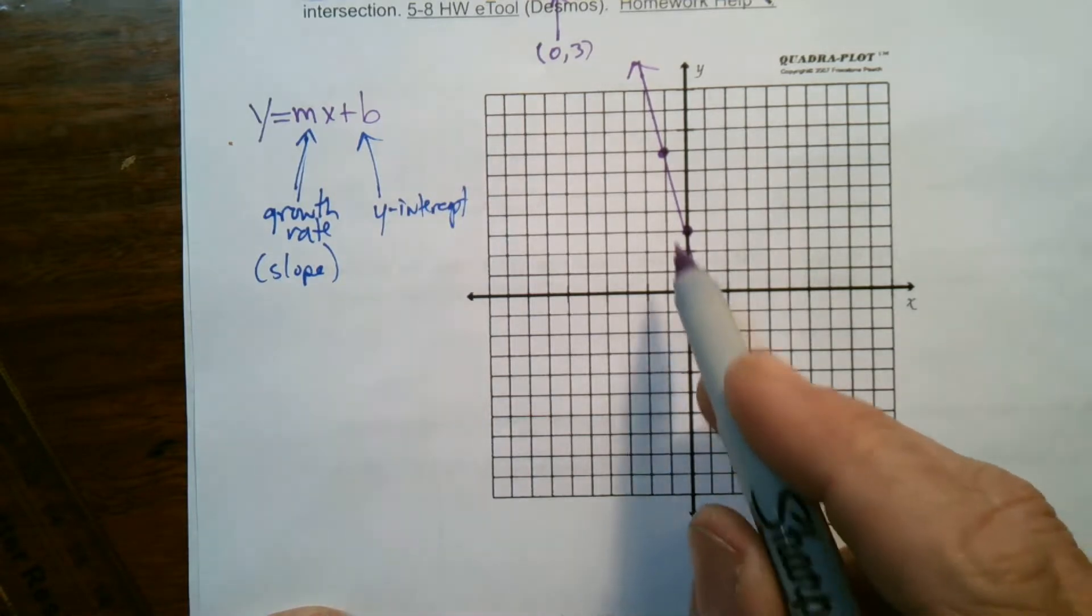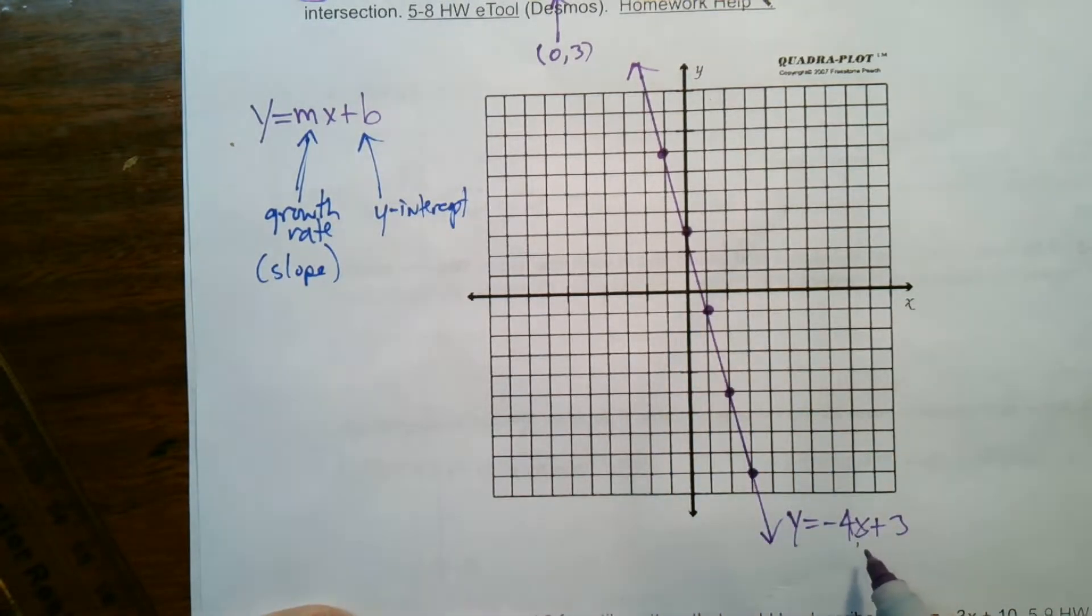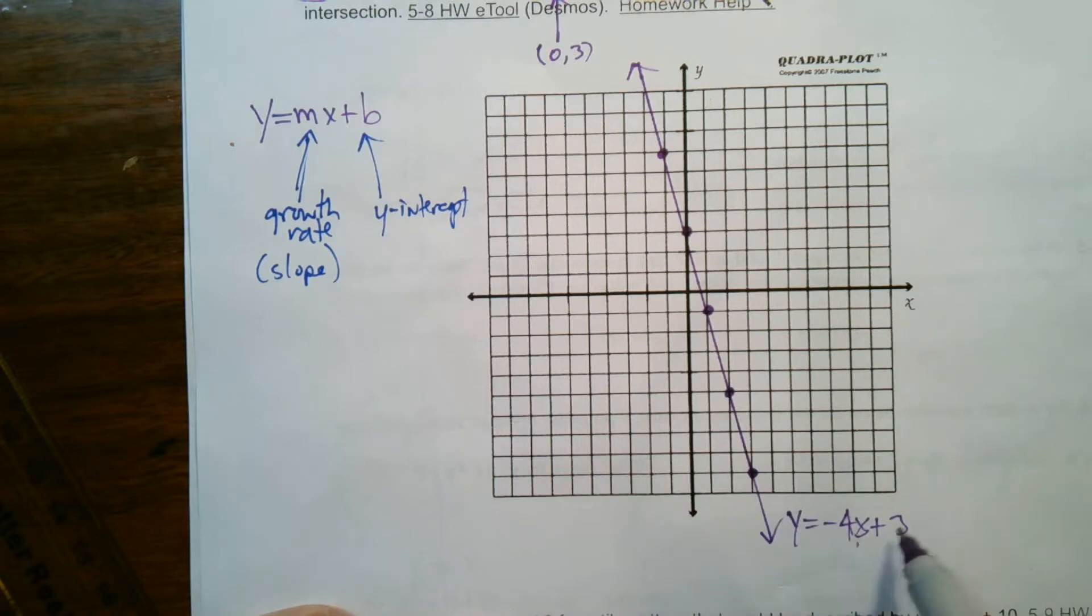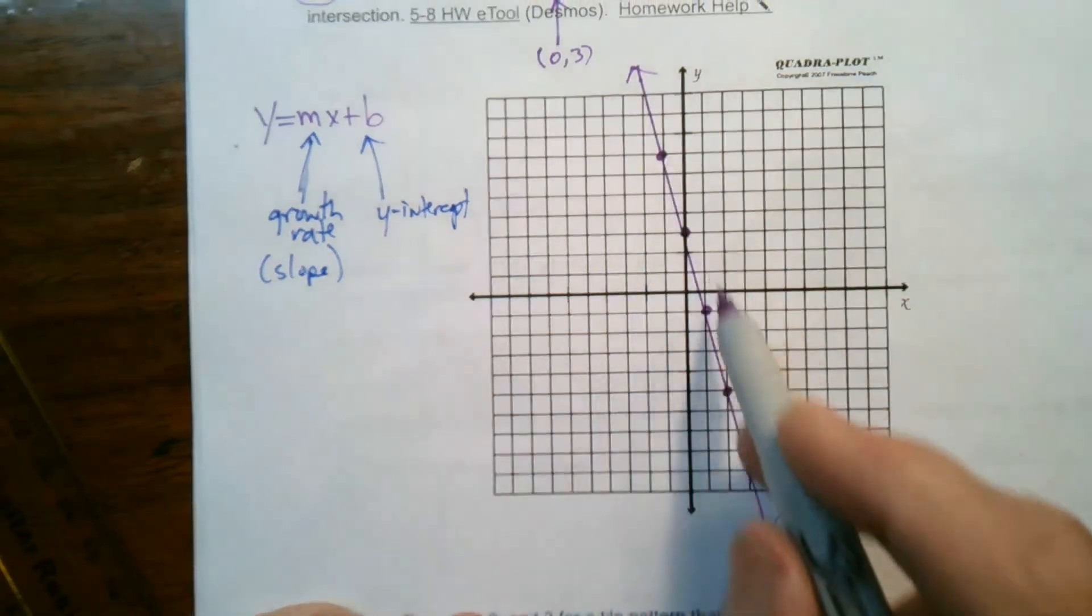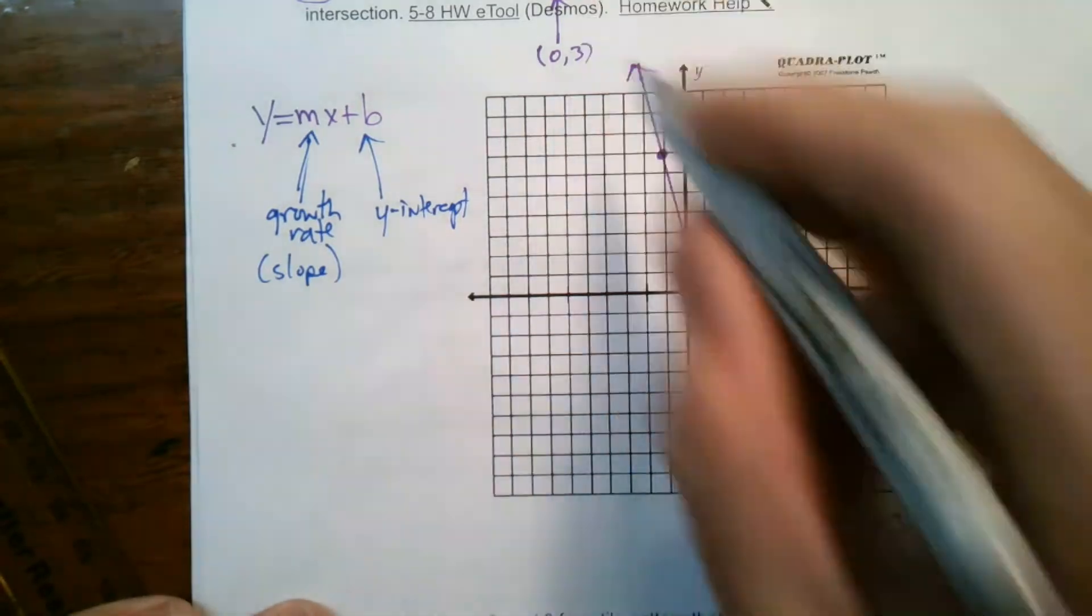Each of those points, so if I call this point out here, 1, negative 1, that means when x is 1, if I put a 1 in here, I'll get negative 1 for the y. Negative 4 plus 3 is negative 1. So, that's one of the solutions to this equation. That entire line shows all the solutions to that equation.